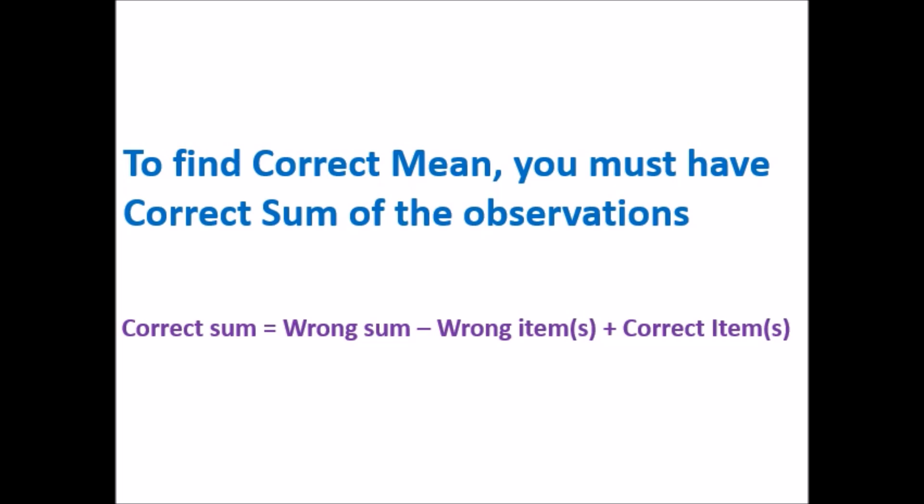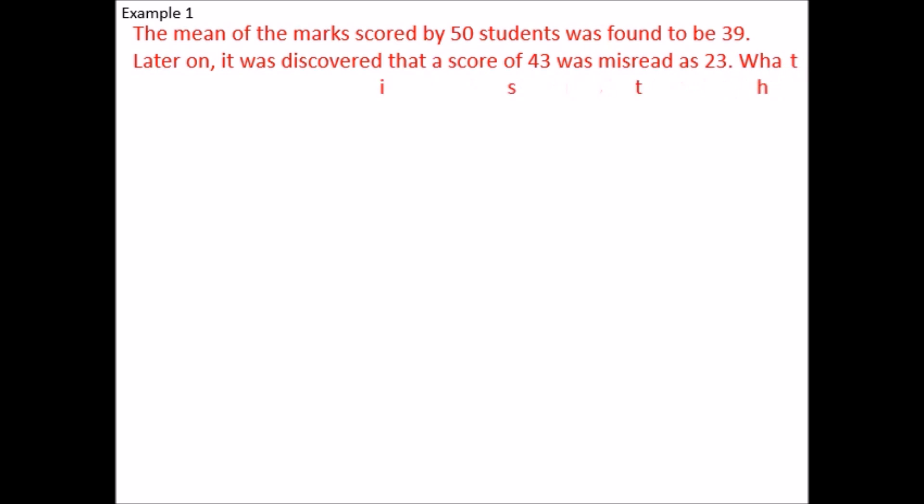Let us see the example. Example 1: The mean marks of 50 students was found to be 39. Later on, it was discovered that a score of 43 was misread as 23. What is the correct mean? So, n = 50.